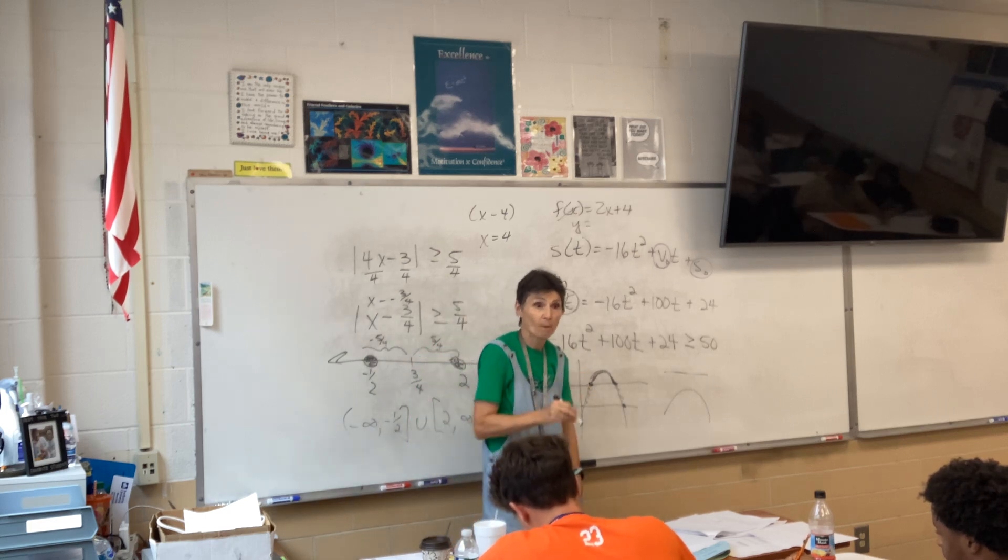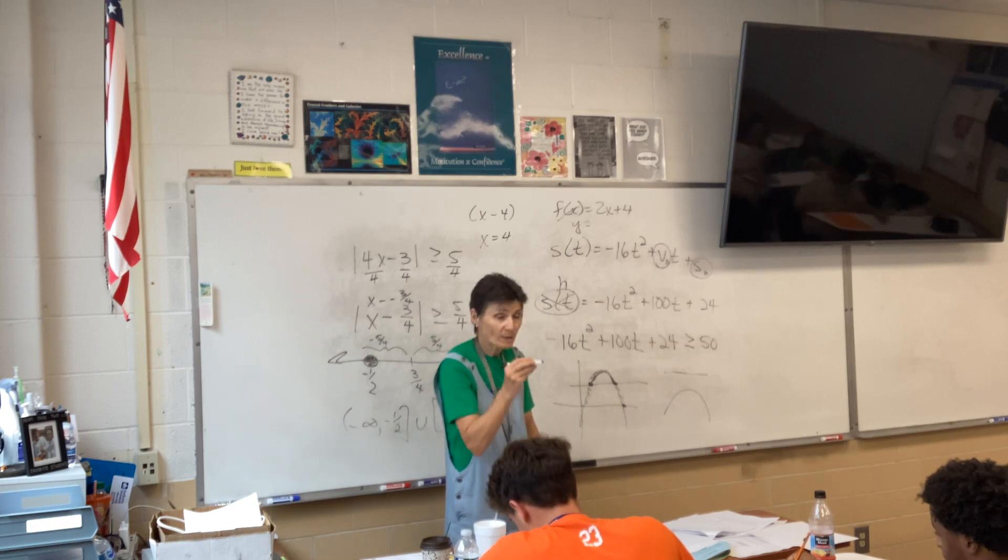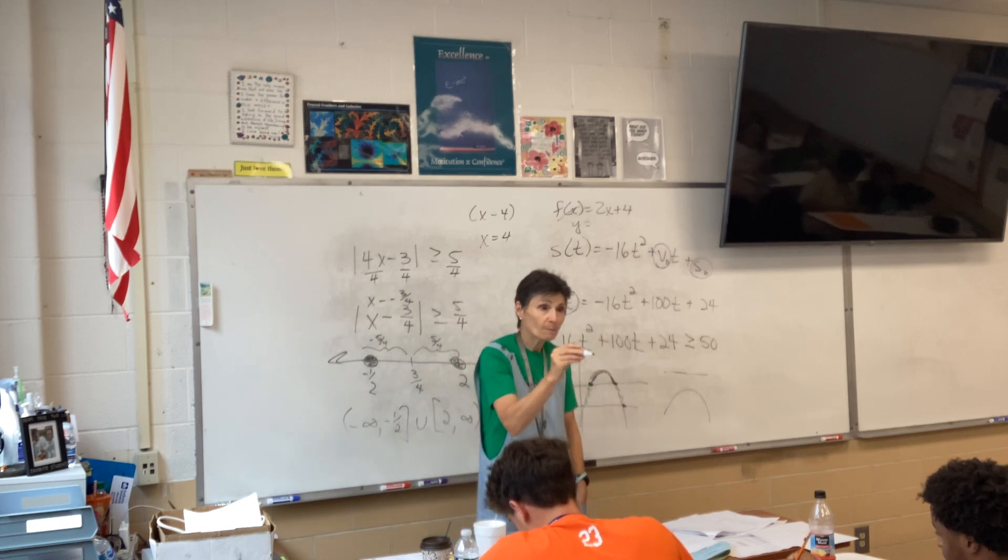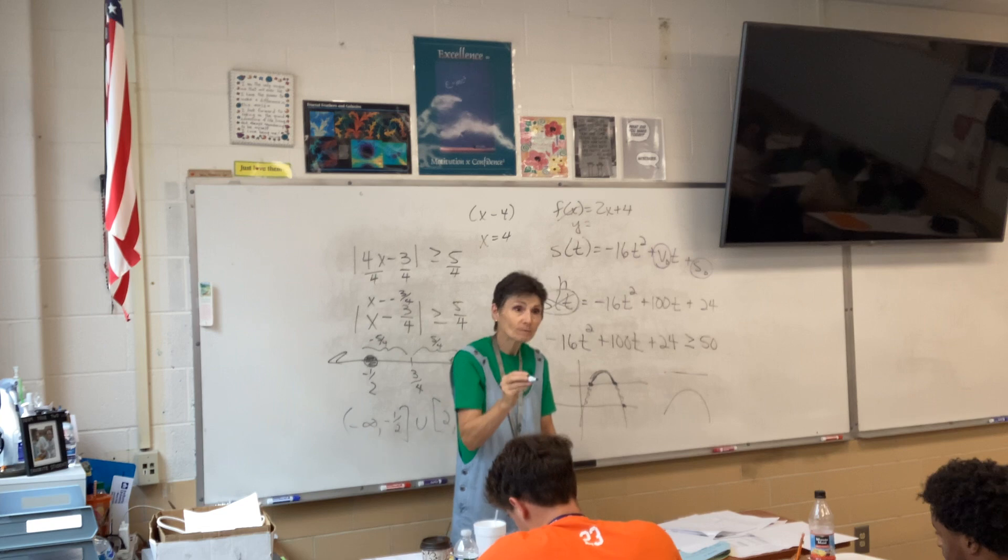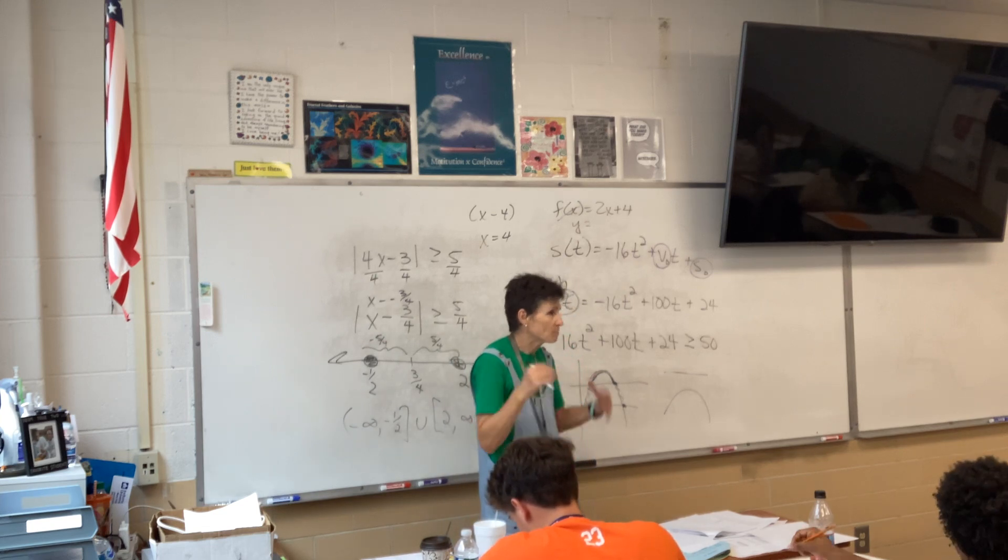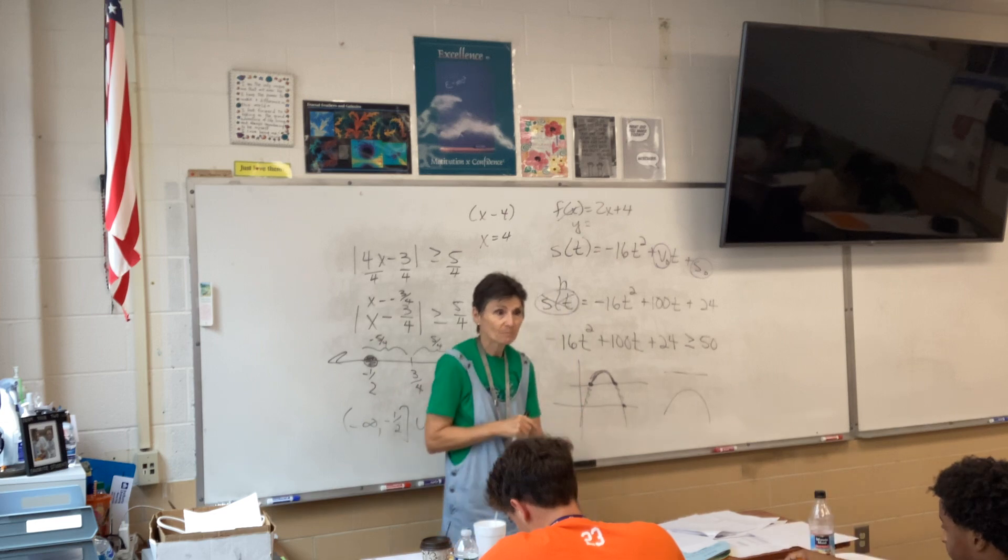What would be the situation if they didn't cross? Well, the ball, this says when is the ball at least 50? What if the ball only gets up to 32 or something? Could that happen? Yeah. And so then when you try to graph them, then you would not get an intersection.